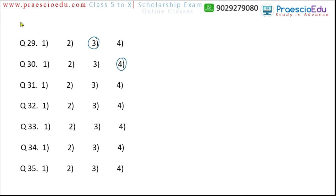Question 31: ring, watch, necklace, and nose ring. Ring, necklace, and nose ring are ornaments, but a watch is an instrument worn to tell time, not an ornament. So option two, watch, is the different one. Question 32: chest, heart, lungs, and intestine. Heart, lungs, and intestine are internal body parts, but chest is external. So option one, chest, is the different one.